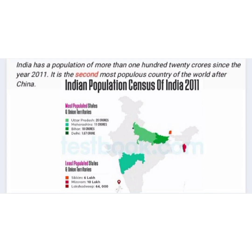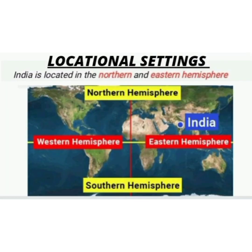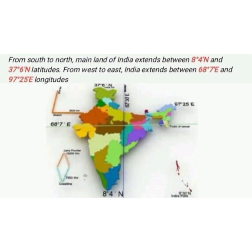Since the year 2011, India is the second most populous country in the world after China. Now we will study about locational settings. India is located in the northern and eastern hemisphere. From south to north, the mainland of India extends between 8°4'N and 37°6'N latitudes. From west to east, India extends between 68°7'E and 97°25'E longitudes.